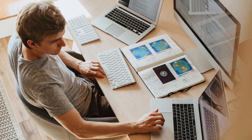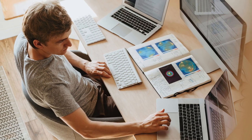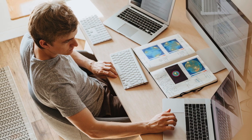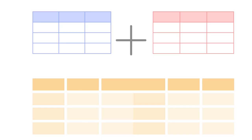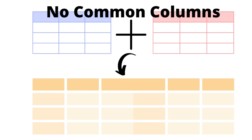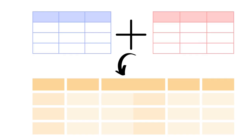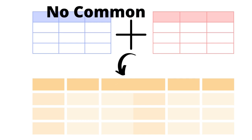Hello everybody. A few days back when I was solving a pretty interesting SQL problem, this particular thing struck into my mind: can we join two tables if there is not a single common column available in both of these tables? Is there any method by which we can do this? I was not concerned with whatever output this query would generate, but is this even possible? Finally I had the answer.